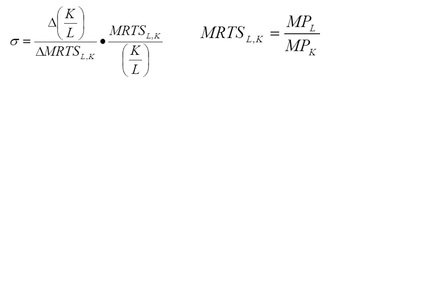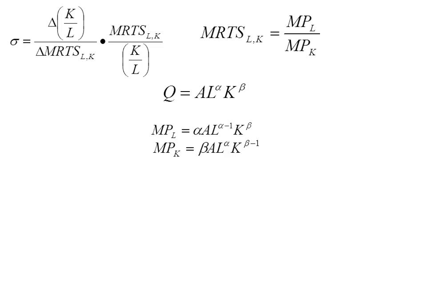So let's find the MRTS, because we know that's part of this equation — it's the ratio of the marginal product of labor to the marginal product of capital. Going back to the original production function, the marginal product of labor is alpha times A times L to the alpha minus 1 times K to the beta. The marginal product of capital is beta times A times L to the alpha times K to the beta minus 1. Since this is a Cobb-Douglas, the MRTS simplifies nicely to alpha K over beta L.